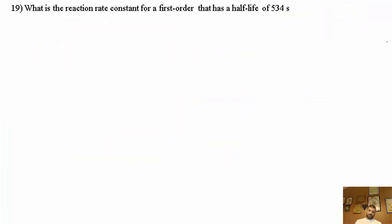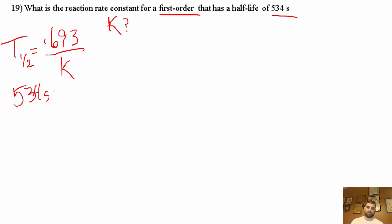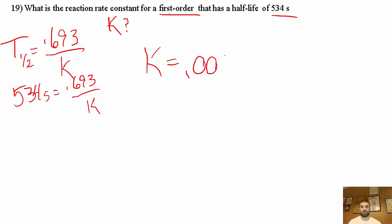Problem 19: what is the reaction rate constant K for a first-order reaction that has a half-life of 534 seconds? Using the shortcut equation t½ = 0.693/K, we know the half-life is 534 seconds, so we solve for K. K = 0.693/534 = 0.00130 s⁻¹.